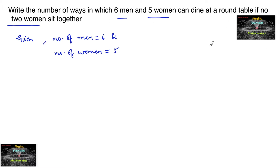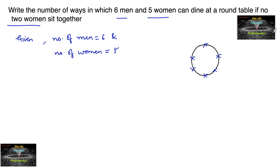This is a problem related to circular permutations. Since the number of men is more than number of women, let us arrange first the six men, so that we will find six gaps between them: one, two, three, four, five, and six.